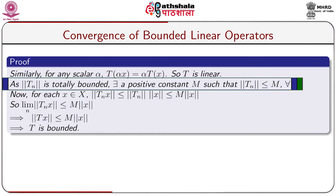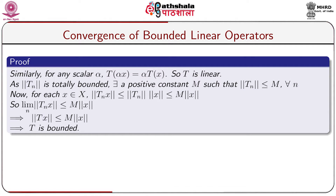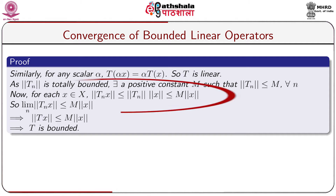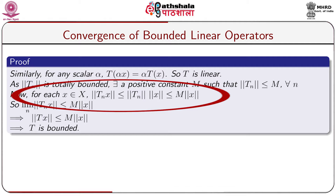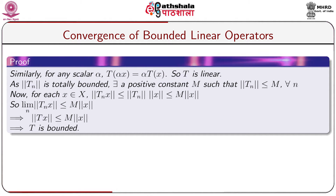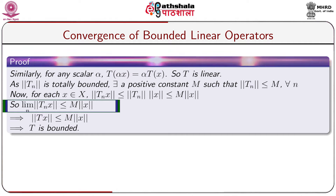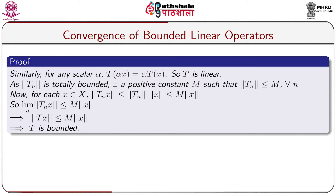Since the sequence of norms of T_n is totally bounded, there exists a positive constant M such that norm of T_n ≤ M for all n. For each x in X, norm of T_n(x) ≤ norm of T_n · norm of x ≤ M · norm of x because T_n are bounded linear operators. Taking the limit as n → ∞, norm of T(x) ≤ M · norm of x, showing that T is bounded. Thus T belongs to BdL(X,Y).